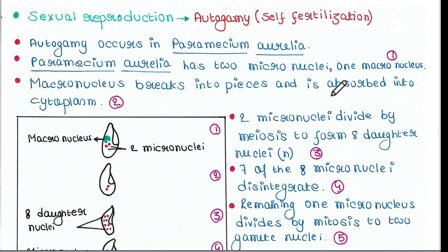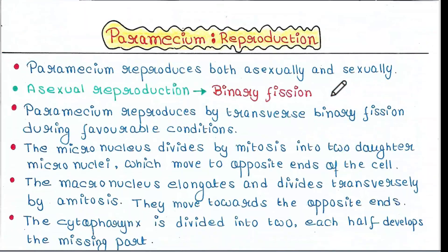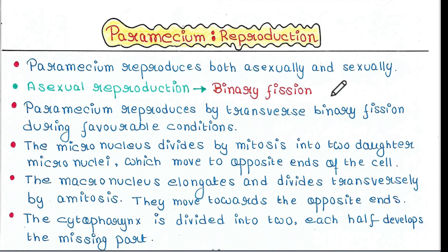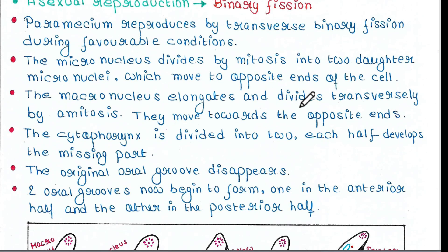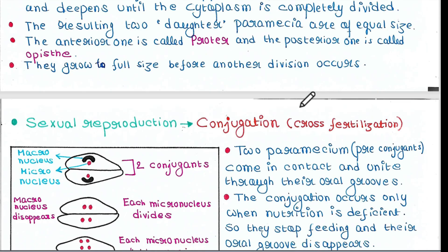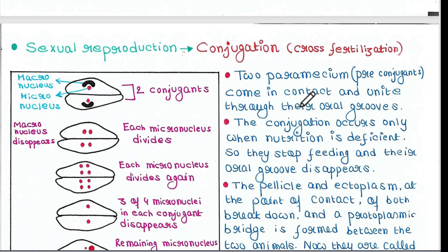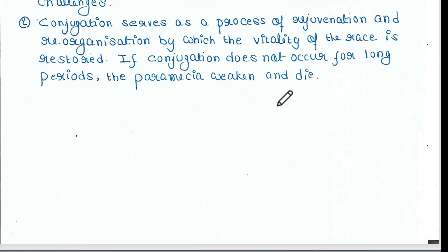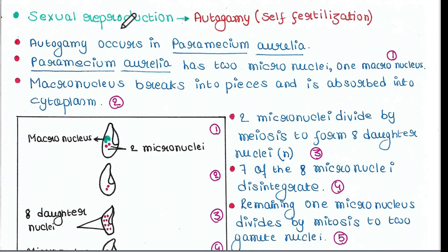In our last lecture, we discussed the reproduction of paramecium. We have already seen that paramecium reproduces both asexually and sexually. Asexual reproduction is done by binary fission. There are different types of sexual reproduction in paramecium, the first being conjugation, which was also discussed in the last lecture. Today I will talk about one more way of sexual reproduction in paramecium — that is autogamy.